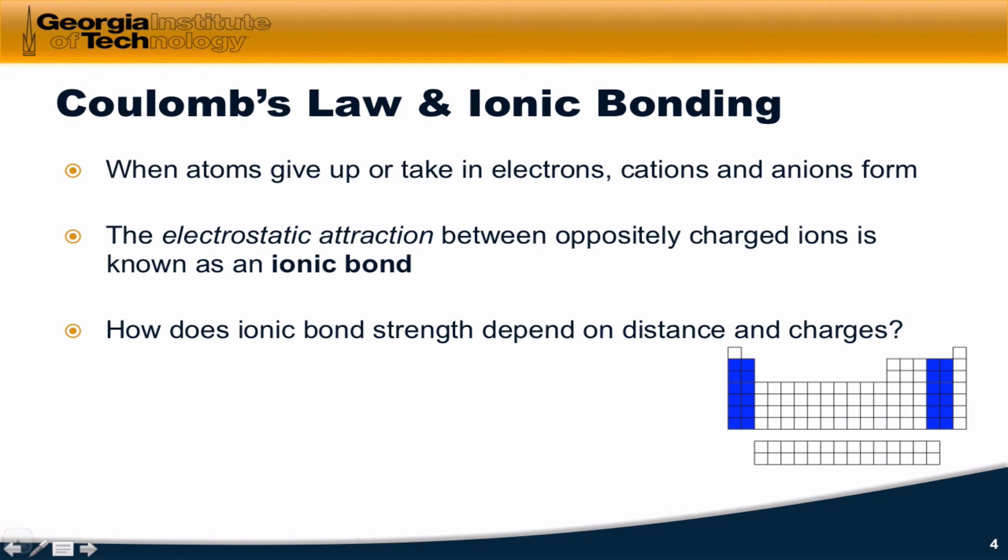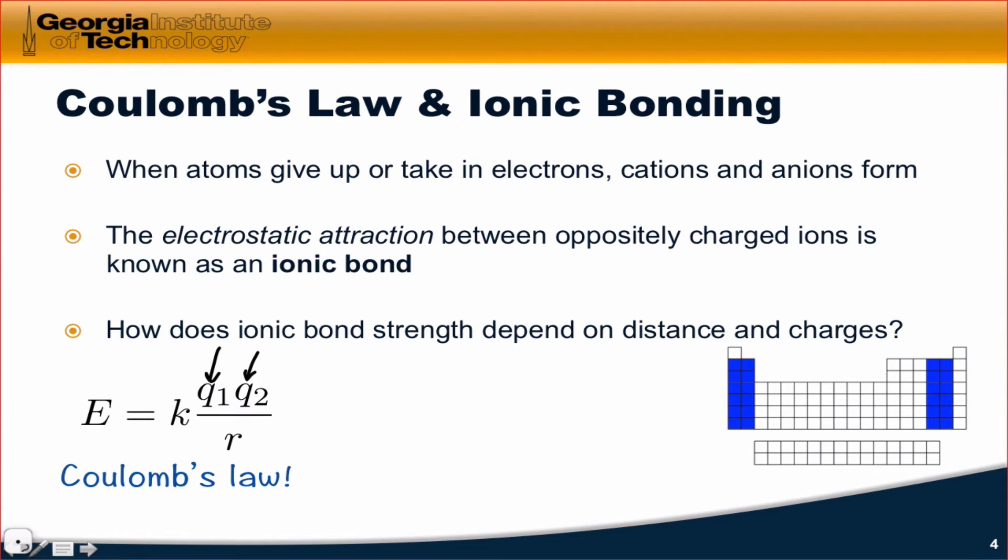How does ionic bond strength depend on distance and charges? So, in other words, how strong is an ionic bond given the radii of the ions involved and their corresponding charges? Well, actually, we already know the answer to this question, right? Coulomb's law. In Coulomb's law, Q1 and Q2 are the charges of the two ions involved. And R is the distance between them.